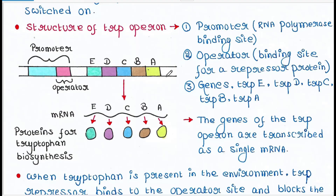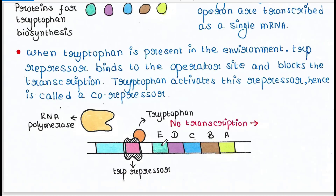These five genes can make mRNA, and from that mRNA we get five proteins. The genes of the trp operon are transcribed as a single mRNA. From that single mRNA, five different proteins are made — which are basically enzymes — and these five enzymes help synthesize tryptophan.